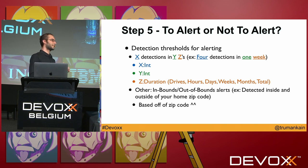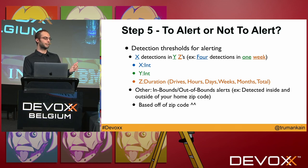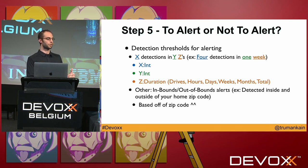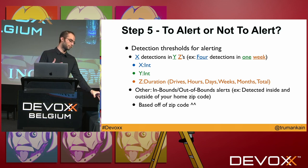The alert threshold system works as X detections in Y Z, where X is an integer count, Y is an integer, and Z is one of: drives, hours, days, weeks, months, or total. For example, four detections in one week was the demo example. This gives a lot of control over alerting sensitivity. You can also set in-bounds or out-of-bounds alerts based on zip code — for example, alert when a vehicle is detected within my zip code only if it's also been detected outside that zip code — a real-world suggestion from someone in law enforcement.